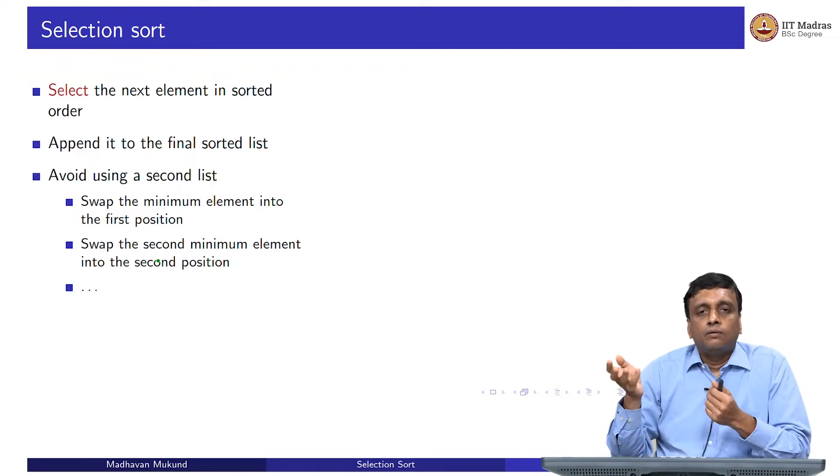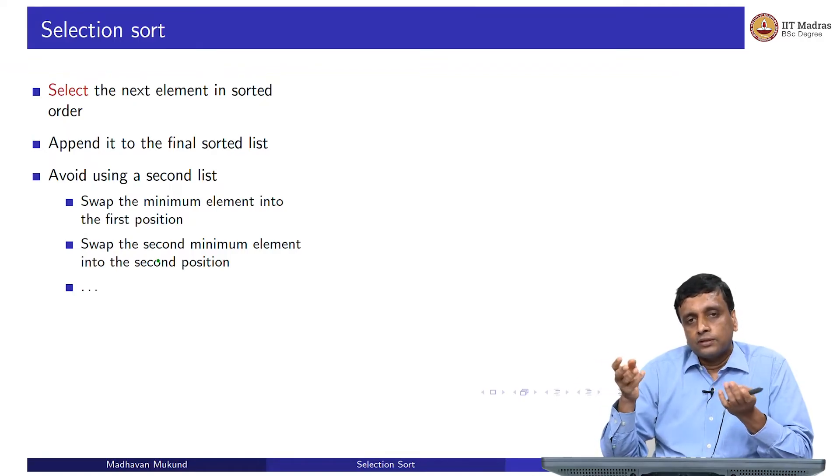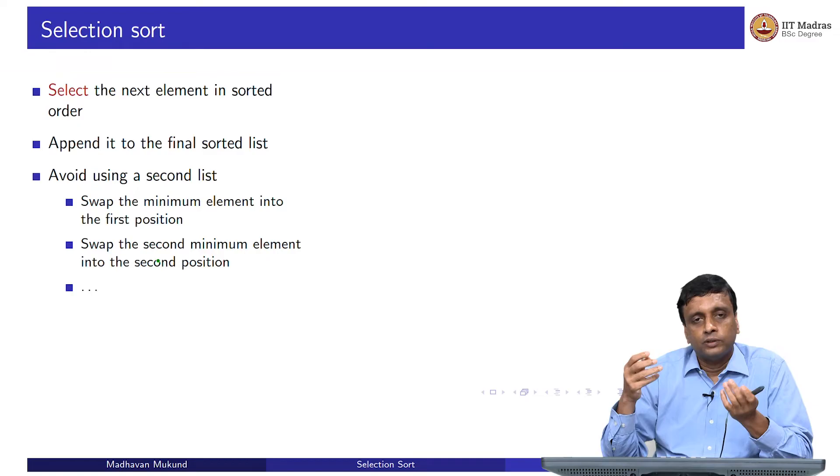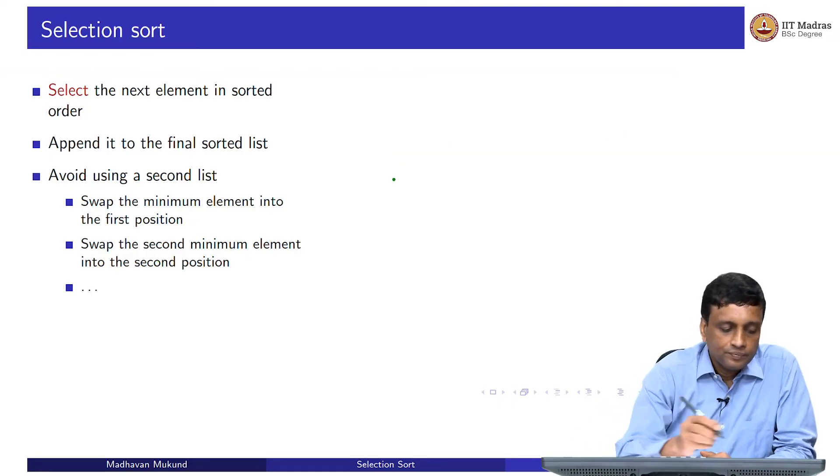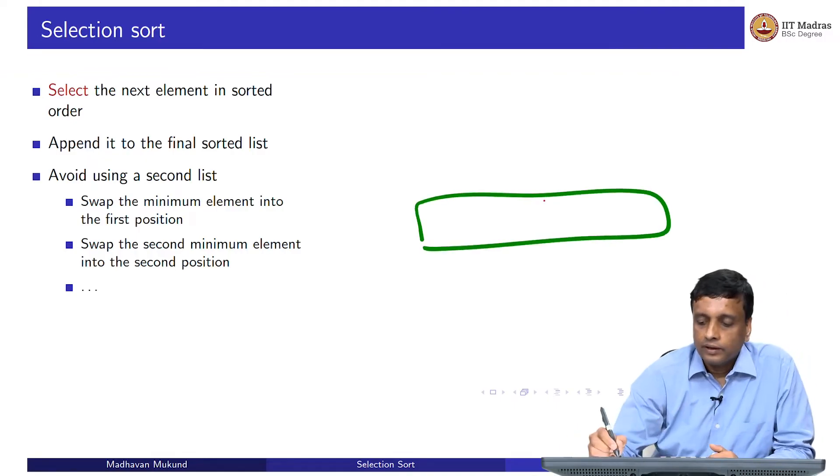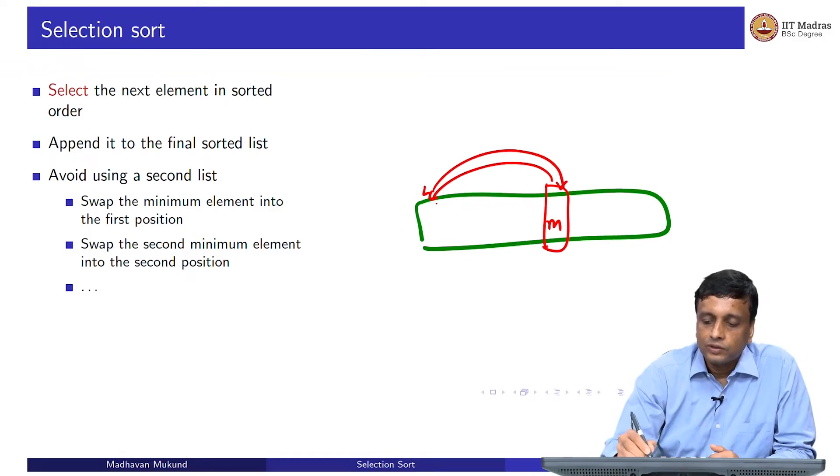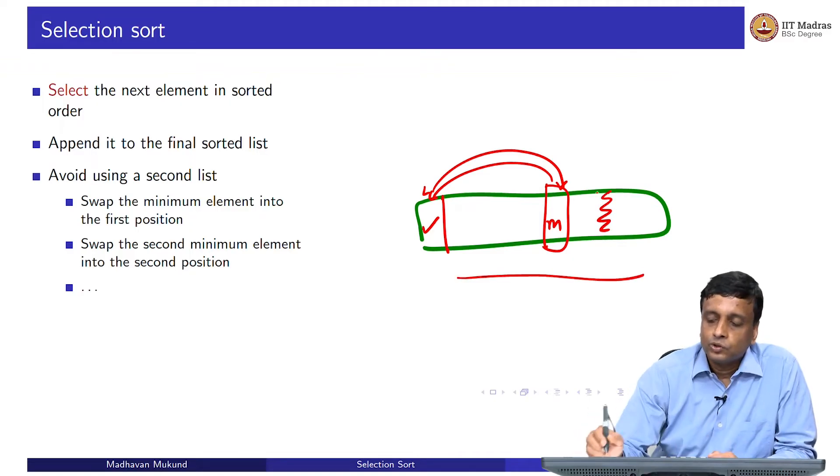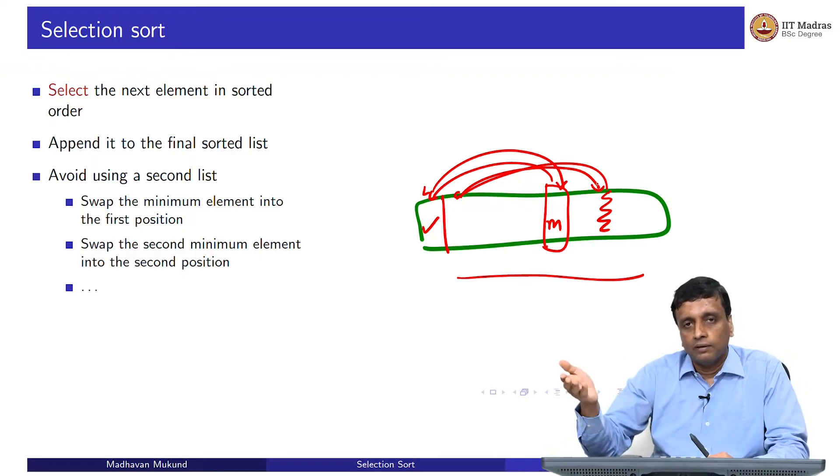For many reasons, we would like to avoid using a second list. We would like to ideally use the space that we have in the list. Supposing we have a large list, we do not want to duplicate it. We want to make the same algorithm work within the same list that we have. A strategy for that is you take the list and go through it and perhaps you find the minimum here. What you now do is you move this to the beginning and move this here. You just exchange the values here and now the minimum is the first position. Now I go through this whole list and maybe I will find the second minimum at this position. Now I move the second minimum here and move this here.